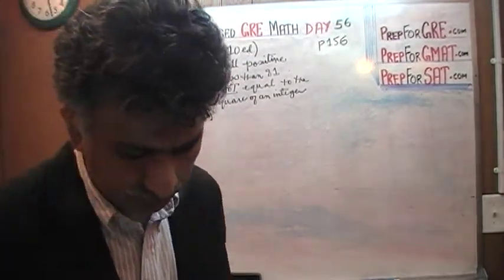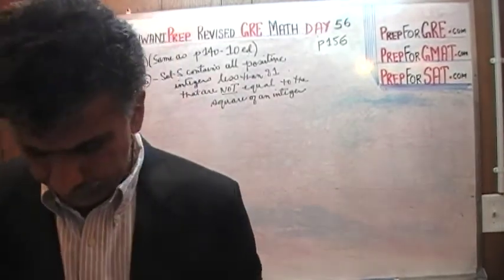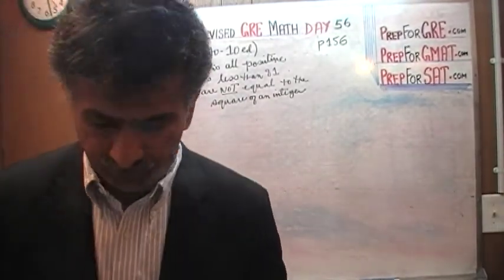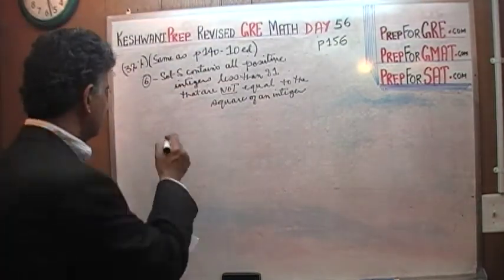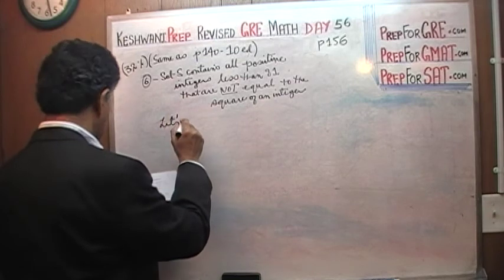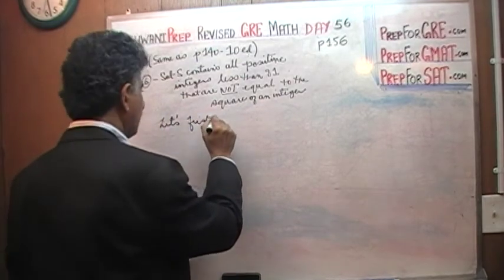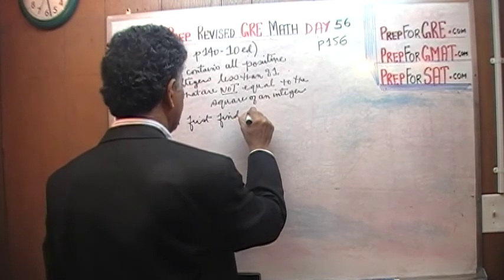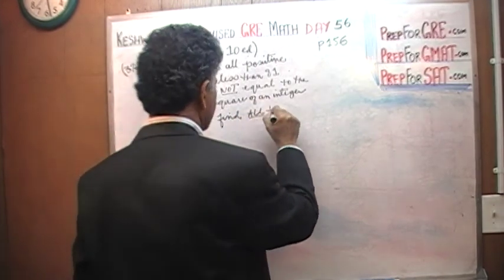What does it mean — they are not equal to the square of an integer? Before we answer the question being asked, let's first find all the positive integers.